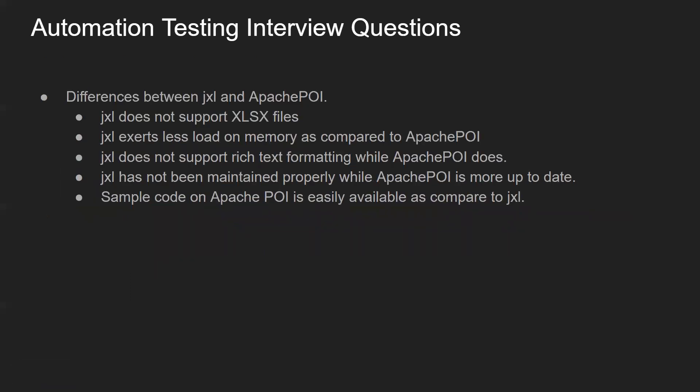What is the difference between JXL and Apache POI? JXL does not support .xlsx files, while Apache POI supports both .xls and .xlsx files. JXL exerts less load on memory compared to Apache POI. Apache POI supports rich text formatting and is a more up-to-date library. JXL has not been maintained to the same extent. Apache POI is heavily used by automation teams, so you will find many blogs and videos available to help resolve any queries related to it — which is not the case with JXL.